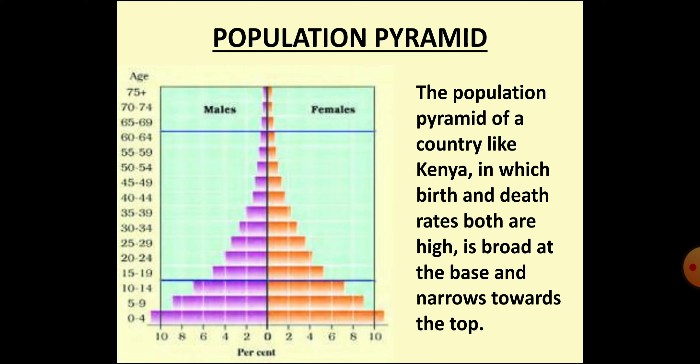If a country has both high birth and death rates, its population pyramid is broad at the base and rapidly narrows at the top. The reason is that despite the birth of many children, most of them die at an early age or in infancy. Few become adults and even fewer reach old age. The population pyramid of Kenya is one such example.